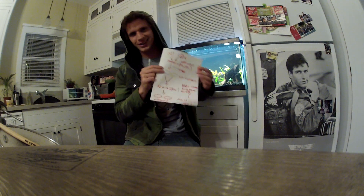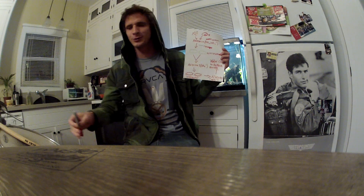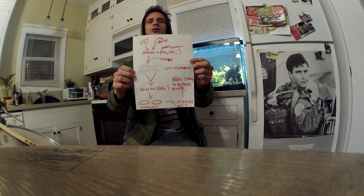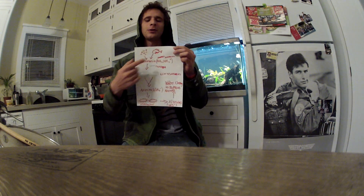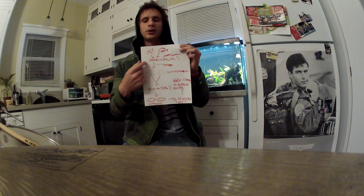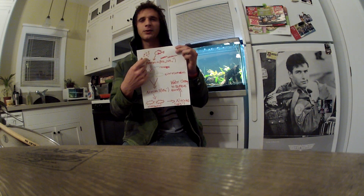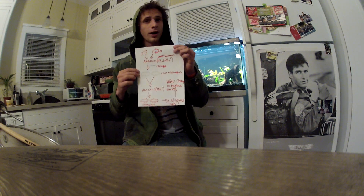Hello everybody, today I'm going to explain the whole nitrogen cycle — the aquarium cycle, whatever you want to call it. I have a little chart here, I hope you all can see this. Pretty much, you start with fish and they poop, and that poop turns into ammonia. Same with leftover fish food — it turns into ammonia.